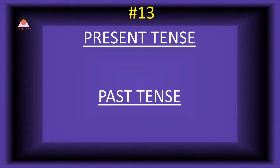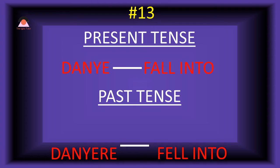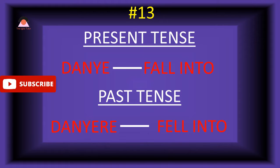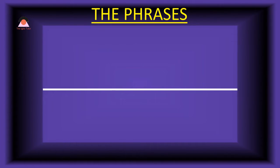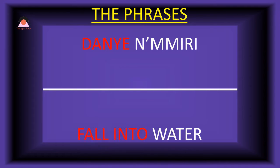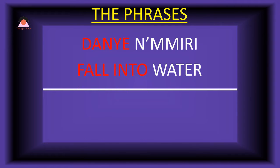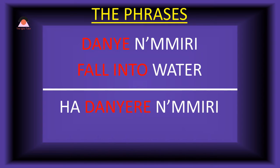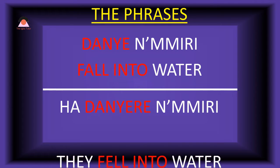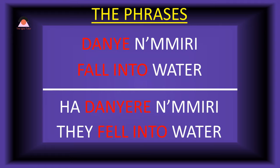Word number thirteen: 'danye,' meaning 'fall into.' The past tense of danye is 'danyere,' meaning 'fell into.' Present tense phrase: 'danye na miri' — fall into water. Past tense: 'ha-danyere na miri' — they fell into water.